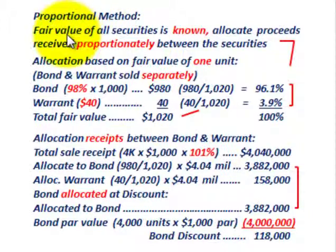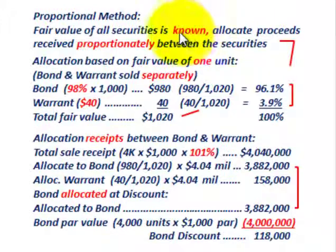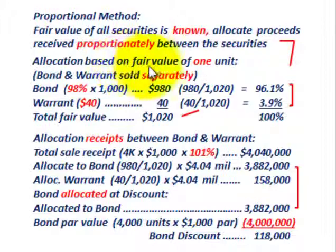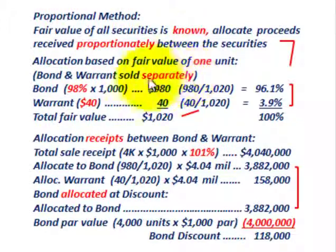For the proportional method, we use it when we know the fair value of all our securities. In this case, we know the separate value for the bond and also the separate market value for the warrant. So we're going to allocate the proceeds received proportionally between these securities, looking at allocating one unit — that would be one bond with one attached stock warrant sold separately.